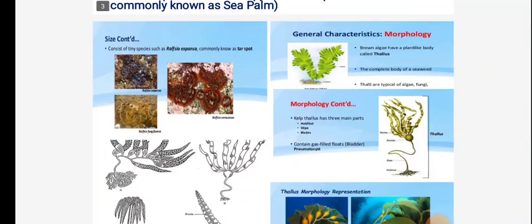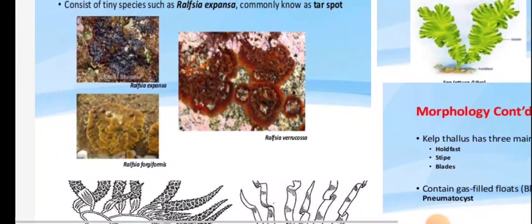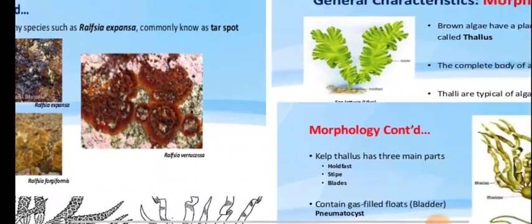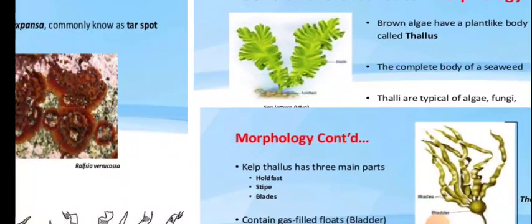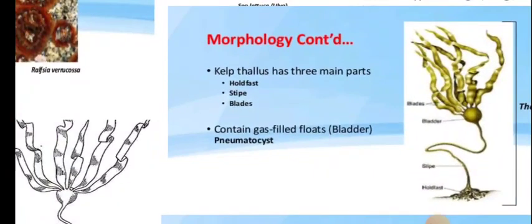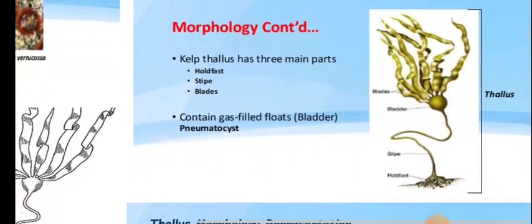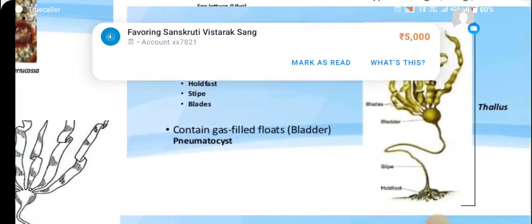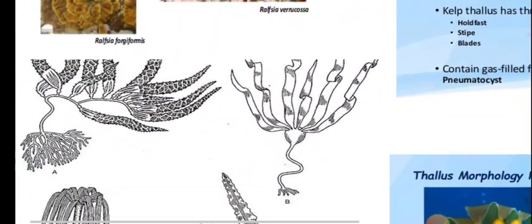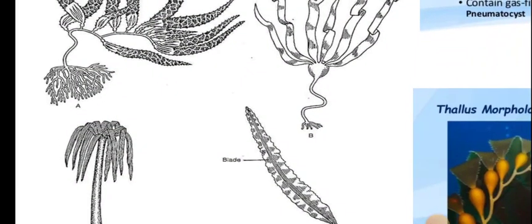Some photographs are shown here. Ralfsia is also a genus. Next, there is Gyraudyella, showing seaweed plant-like brown algae with a plant-like thallus. These thalli are typical algae. Kelps show a holdfast, stipe, and blades in their morphology, which is more typical than other members. The holdfast is at the base, then the stipe, and a very strong bladder which shows storage of gases.